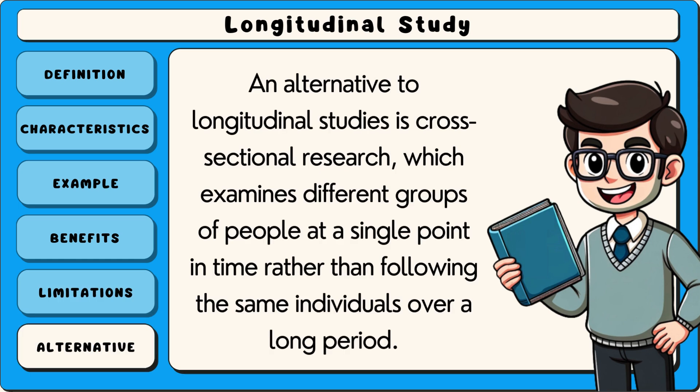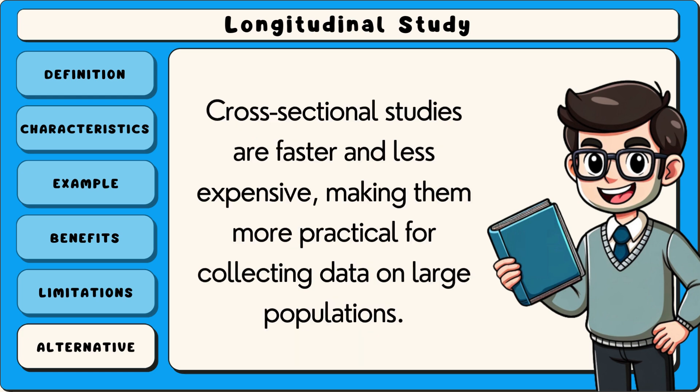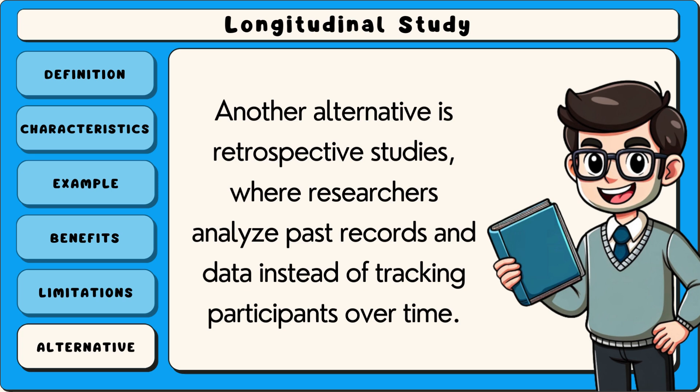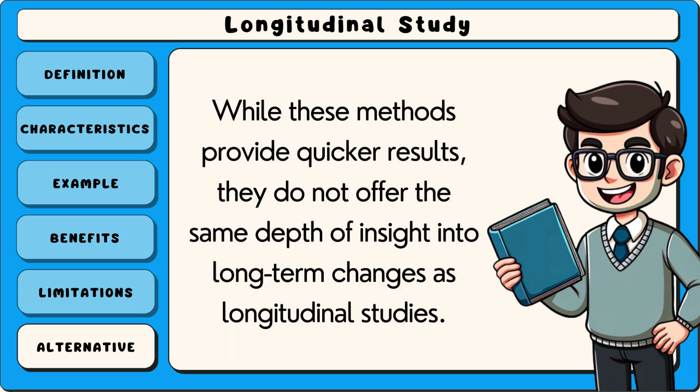Now let's look at an alternative research method. An alternative to longitudinal studies is cross-sectional research, which examines different groups of people at a single point in time rather than following the same individuals over a long period. Cross-sectional studies are faster and less expensive, making them more practical for collecting data on large populations. Another alternative is retrospective studies, where researchers analyse past records and data instead of tracking participants over time. While these methods provide quicker results, they do not offer the same depth of insight into long-term changes as longitudinal studies.